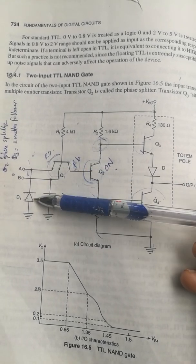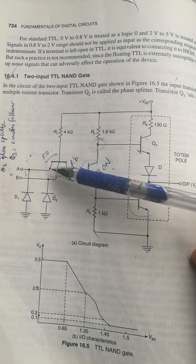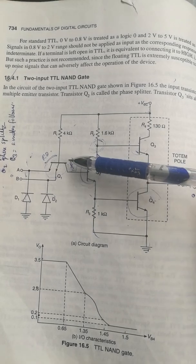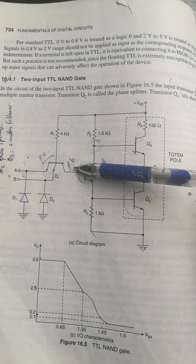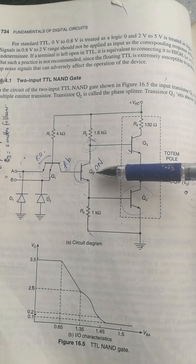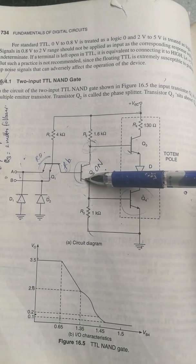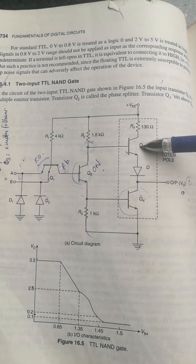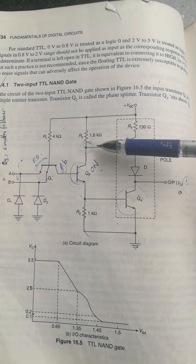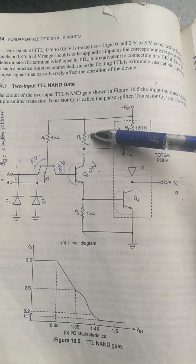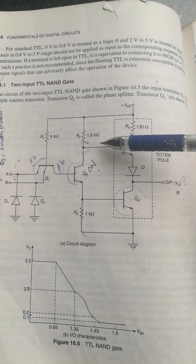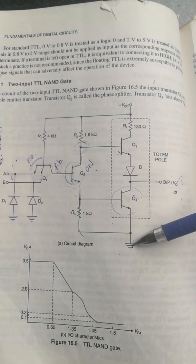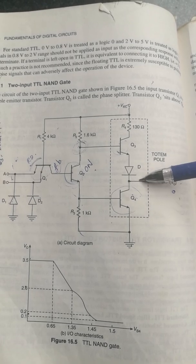With A=B=1 condition: the emitter-base junction of Q1 is reverse biased, no emitter current flows, but the collector-base junction is forward biased, so current flows directly to Q2. Q2 drives Q4, but Q3 does not have sufficient voltage drop across R2 to turn on. Therefore Q3 is off, and the output is logic 0.